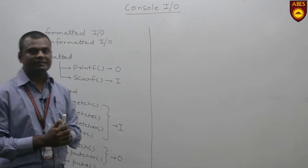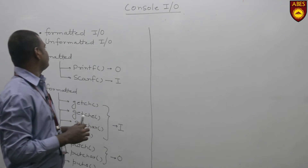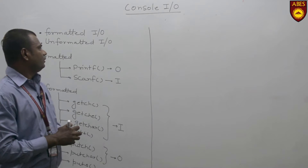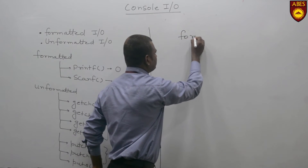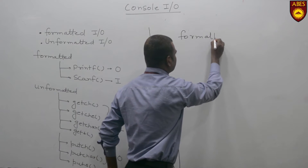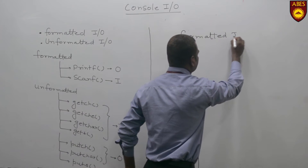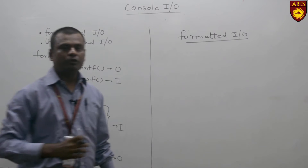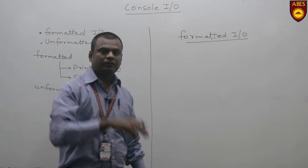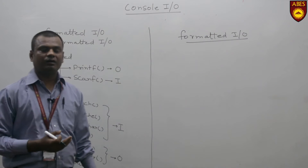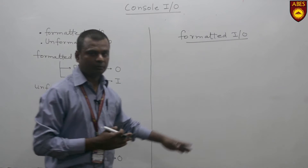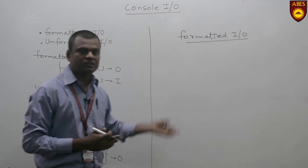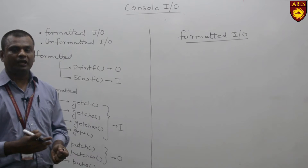Console Output is categorized into two parts: Formatted Input and Unformatted Output. In Formatted Input Output, when we format according to the data, that is called Formatted Input Output. The example of Formatted Input Output is printf for output and scanf for input.